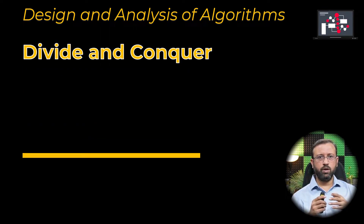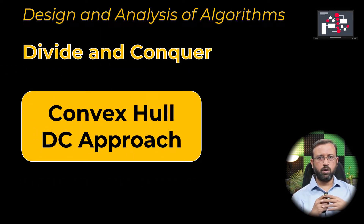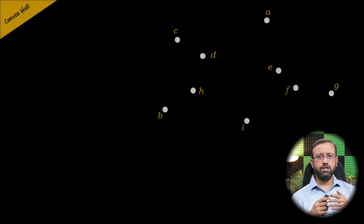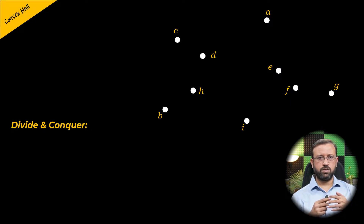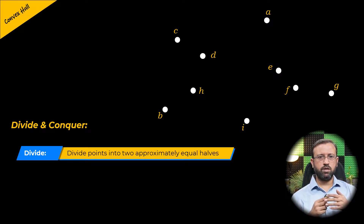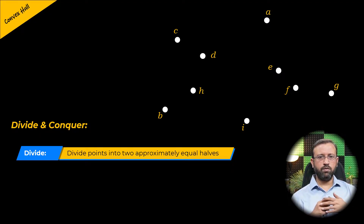In this video, we will look at the divide and conquer algorithm to compute the convex hull for a set of points. Let us consider these nine points. The divide and conquer algorithm has three phases. The first phase is to divide the points into two approximately equal halves. This divide or partition is done based on the x-coordinates. The median of the points according to the x-coordinates is considered as the dividing line.